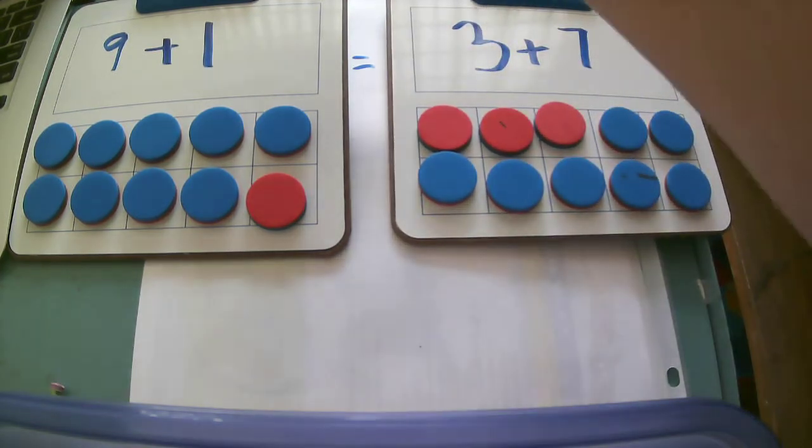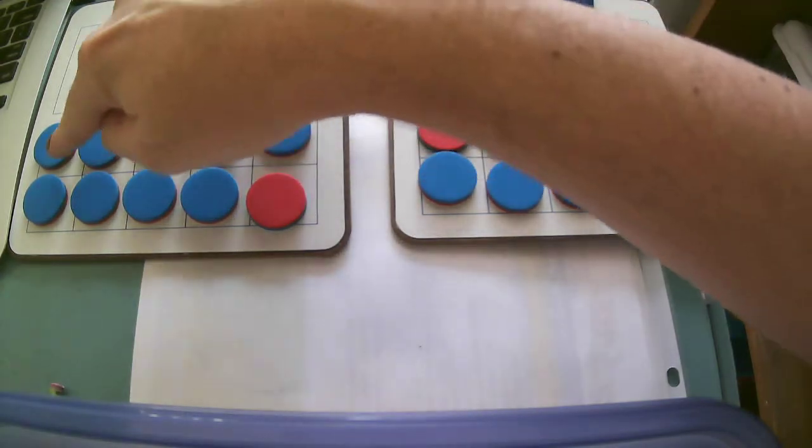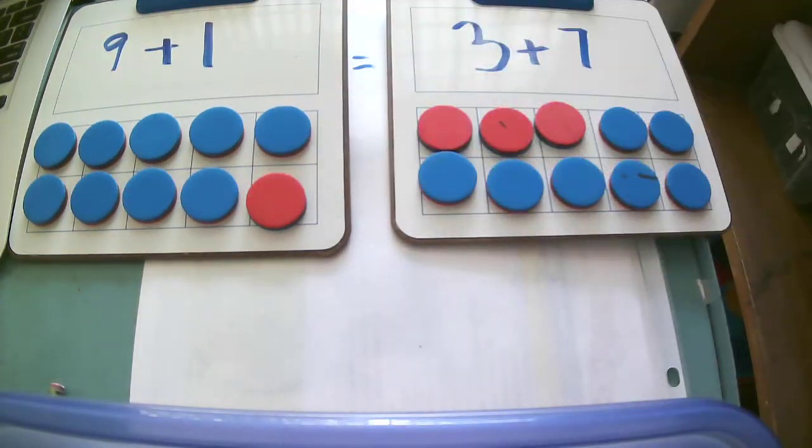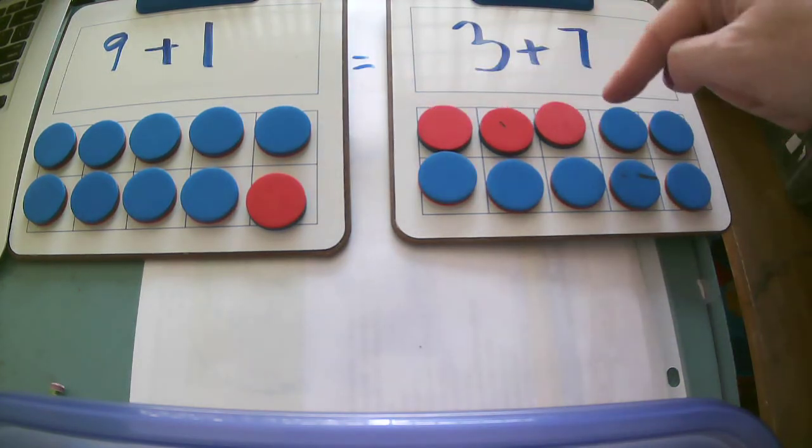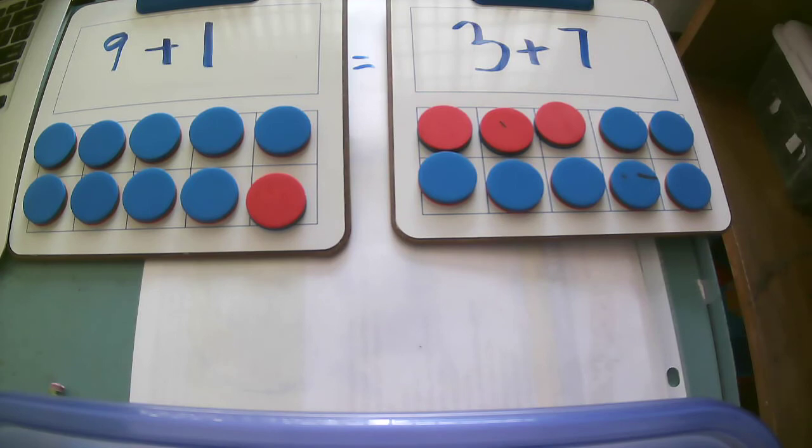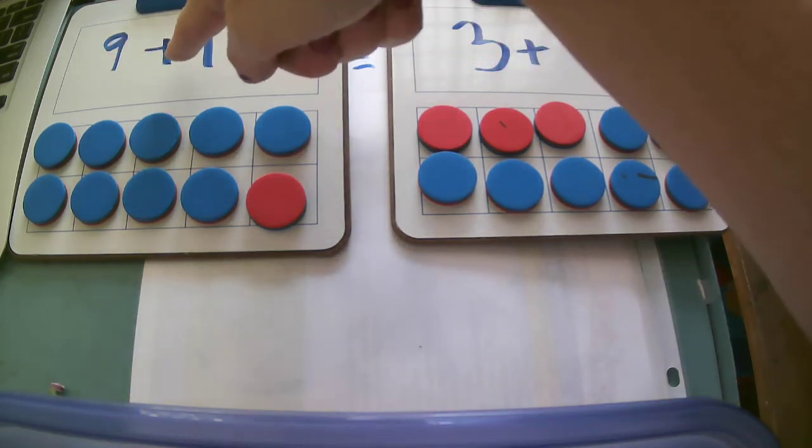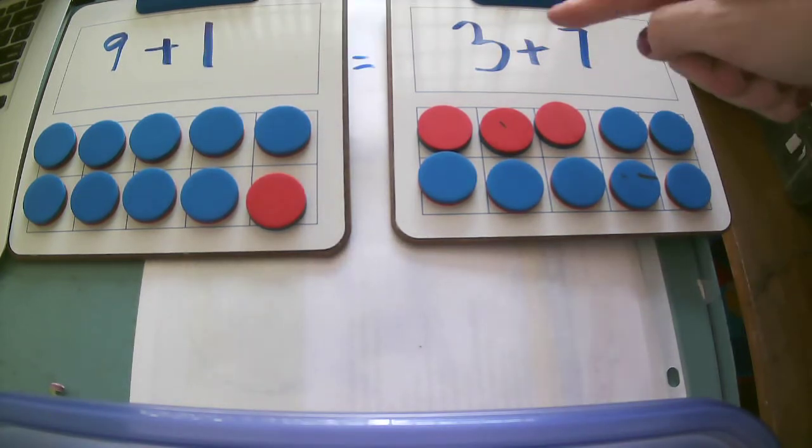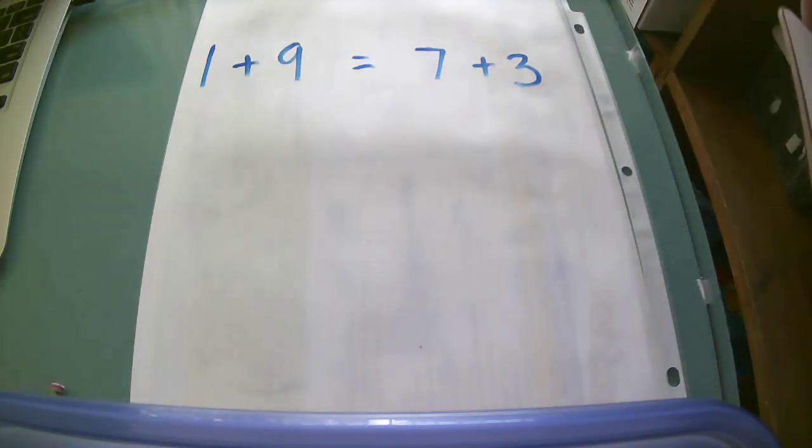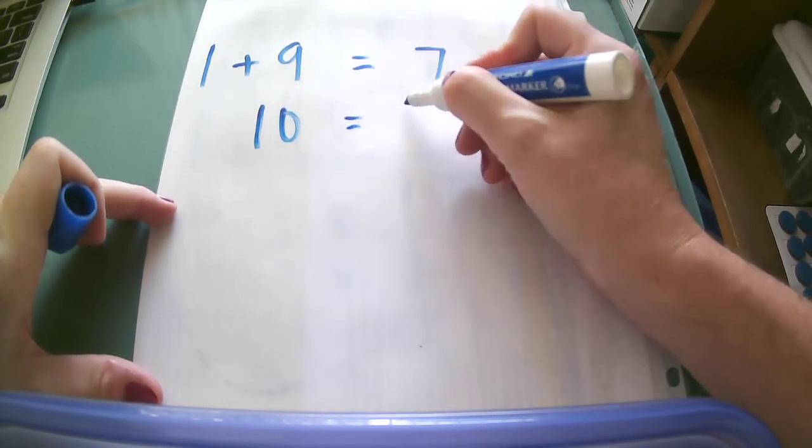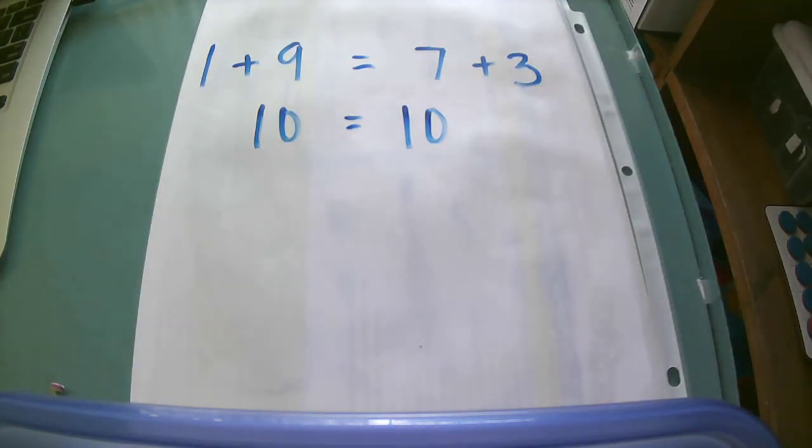I know that 9 and 1 together give me a total of 10, and I know that because I filled up a 10 frame. I know that 3 and 7 together give me 10 because 3 and 7 are number partners for the number 10. So 9 plus 1 equals 10 and 3 plus 7 equals 10. I know that these equations do equal each other because 10 is the same as 10, or 10 is equal to 10.